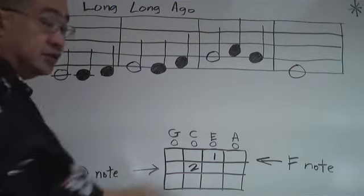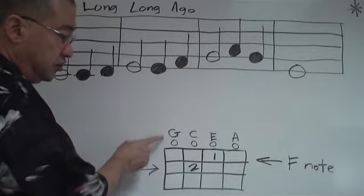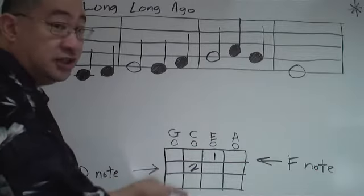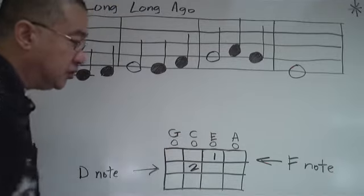So each column is a string. This first column would be the G string, next column would be the C string, this column would be the E string, and this column would be the A string.